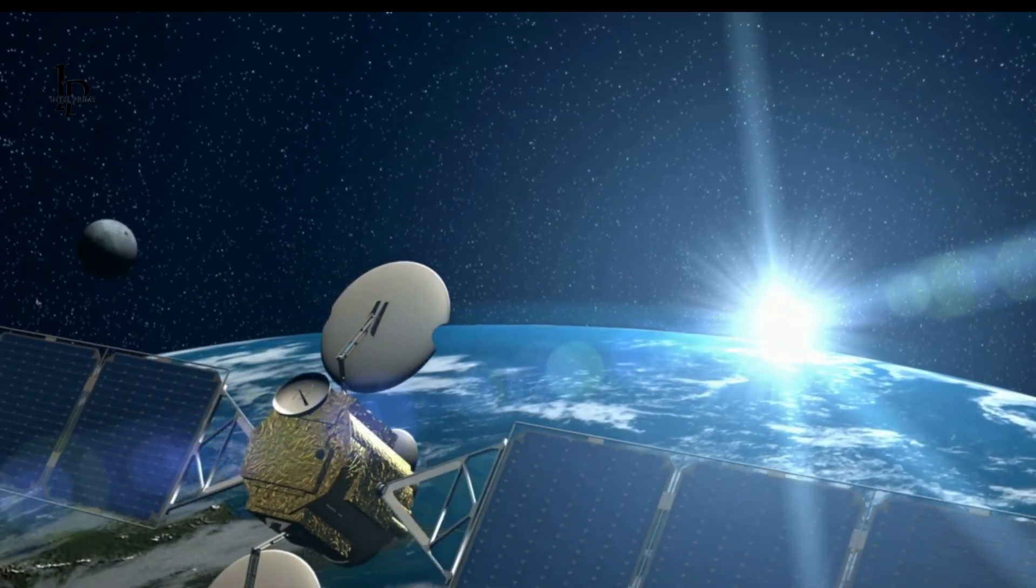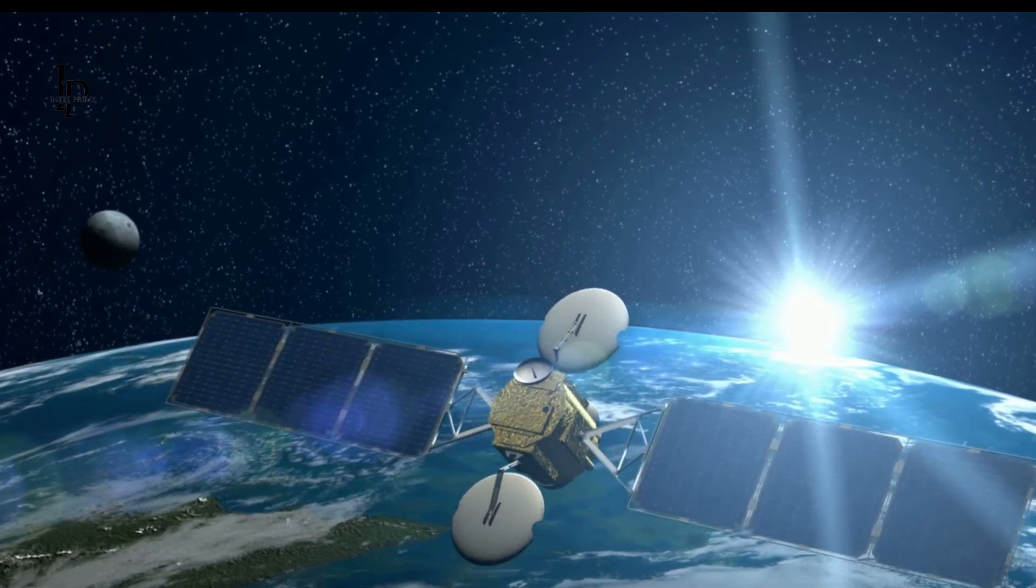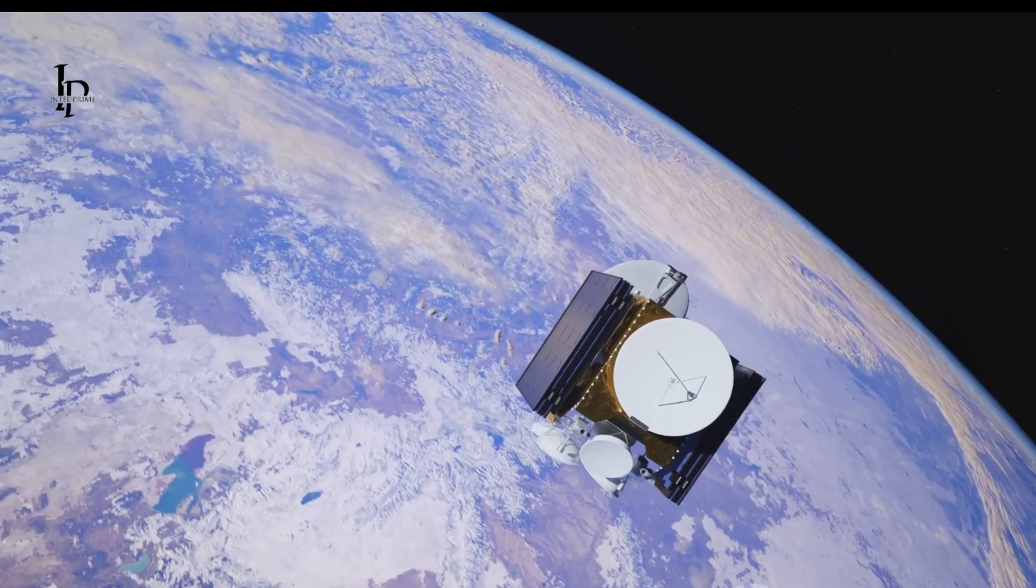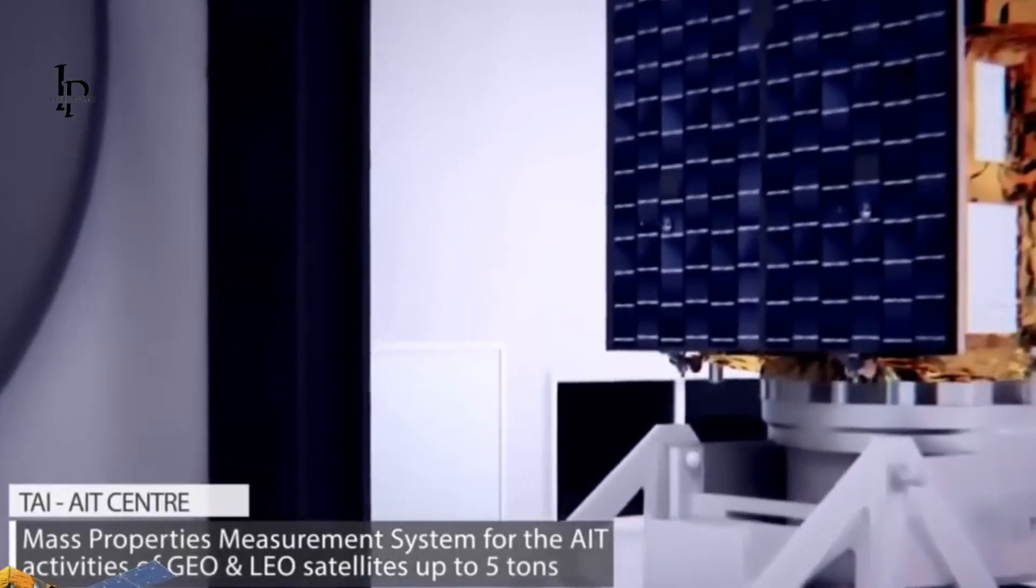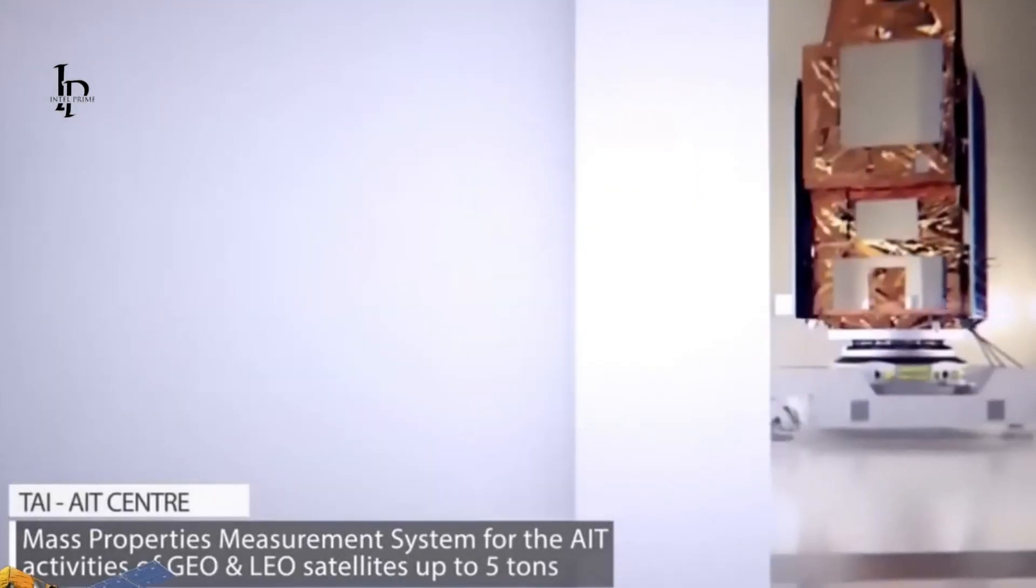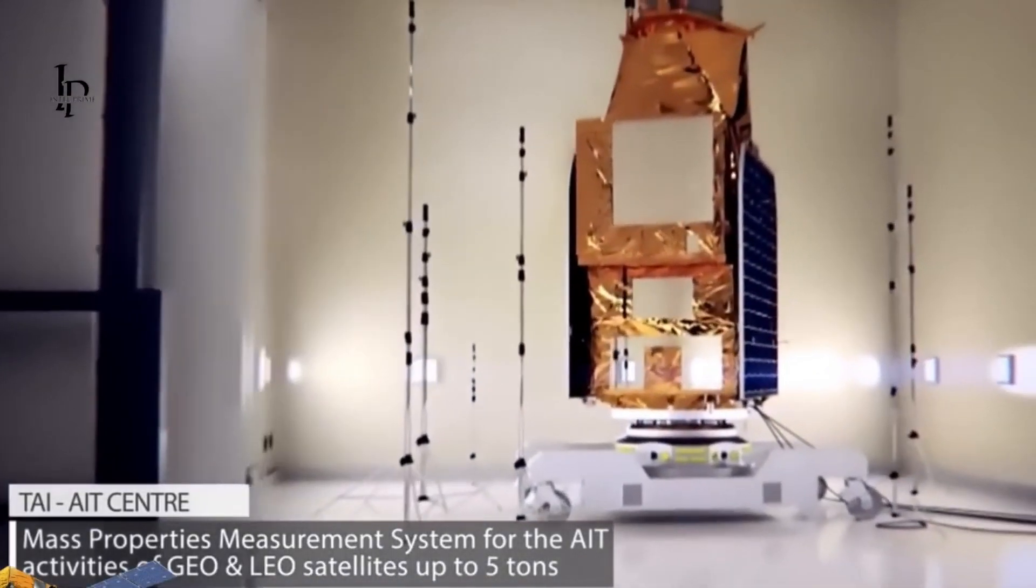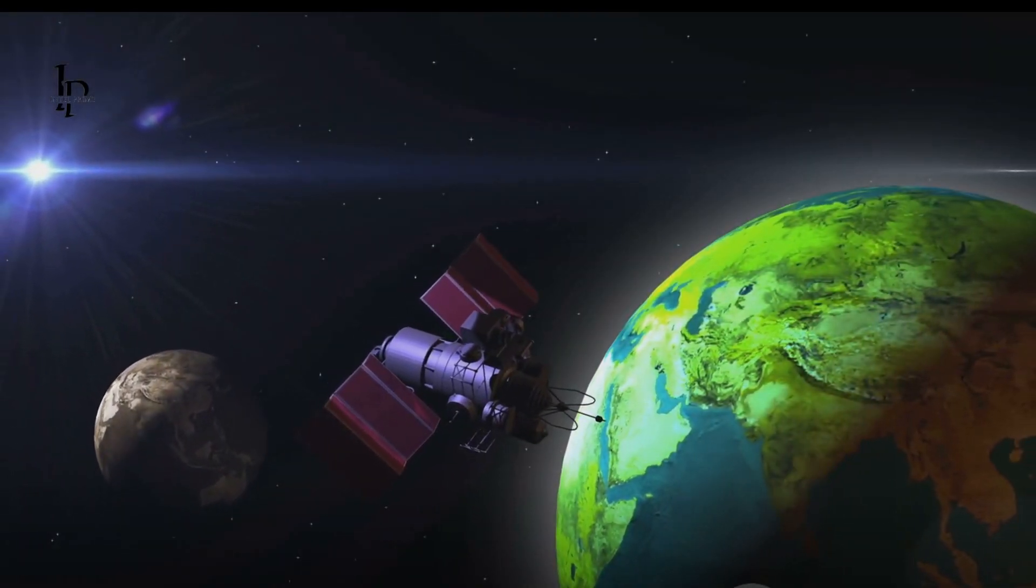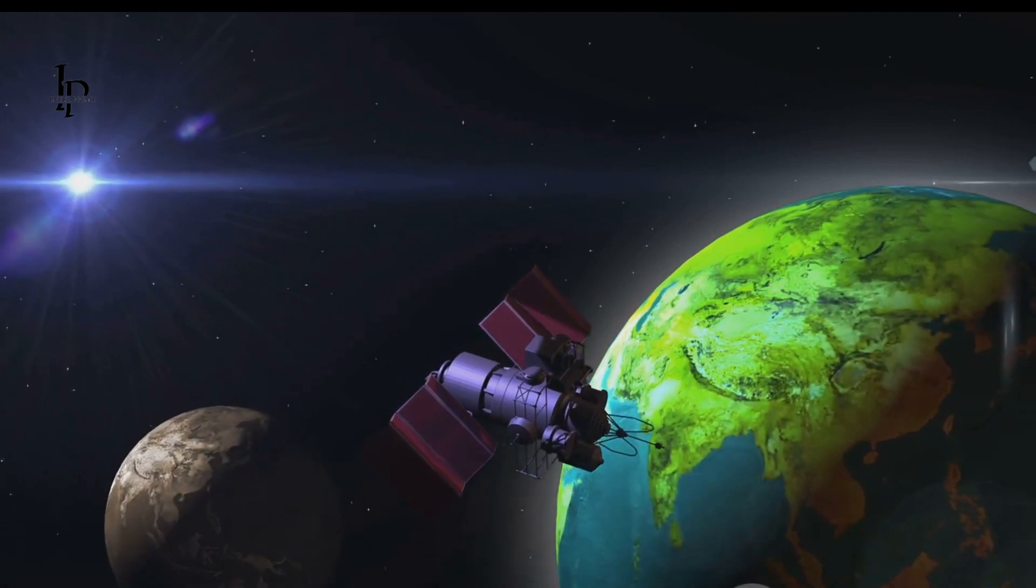The advent of TurkSat-6A will expand Turkey's coverage area to include countries like India, Thailand, Malaysia, and Indonesia. This expansion will boost the population reached by Turkey's satellites to over 5 billion, covering 65% of the world's population.